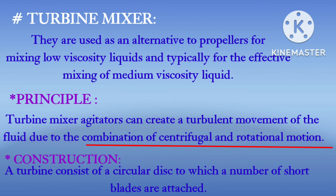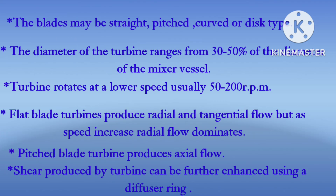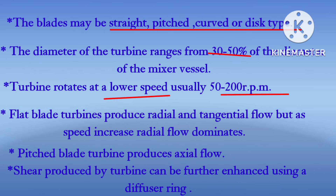Construction of the turbine mixer: a turbine consists of a circular disk to which a number of short blades are attached. There is a wide range of turbine designs. Blades used can be straight, pitched, curved, or disk type. The diameter of the turbine ranges from 30 to 50% of the diameter of the mixer vessel. The turbine rotates at low speed, usually from 50 to 200 RPM.